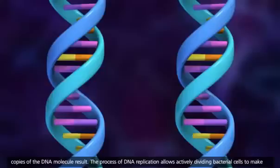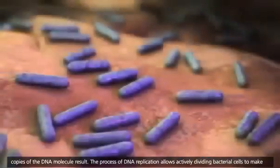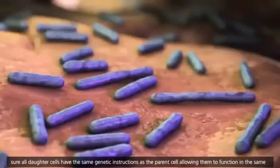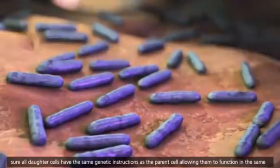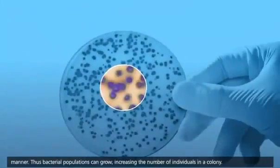The process of DNA replication allows actively dividing bacterial cells to make sure all daughter cells have the same genetic instructions as the parent cell, allowing them to function in the same manner. Thus, bacterial populations can grow, increasing the number of individuals in a colony.